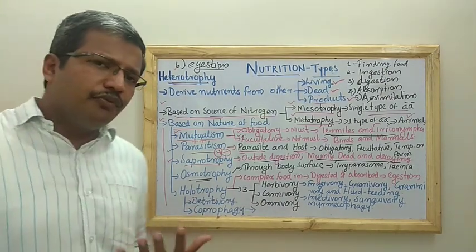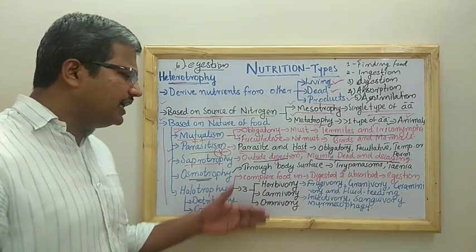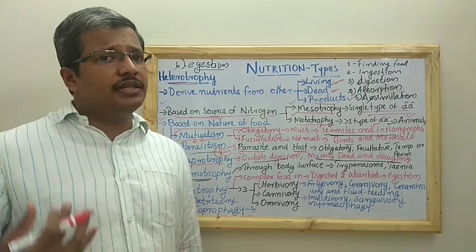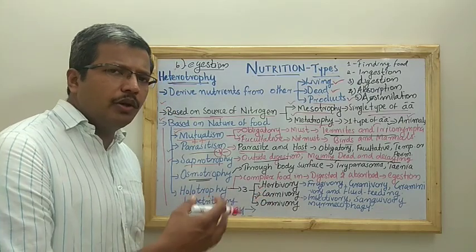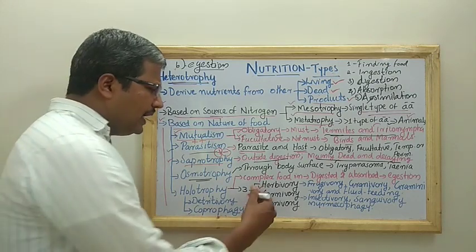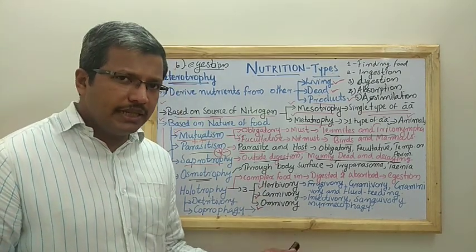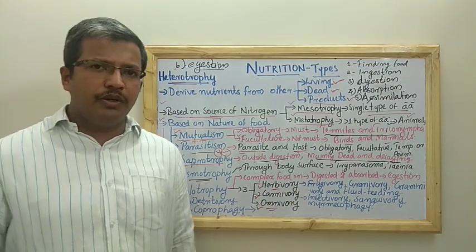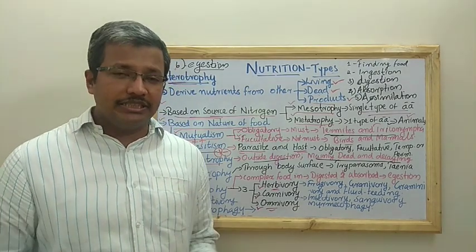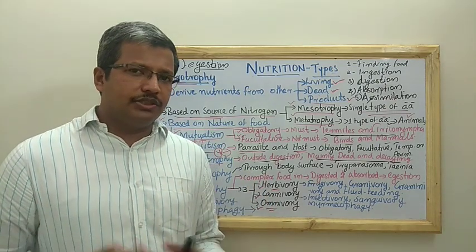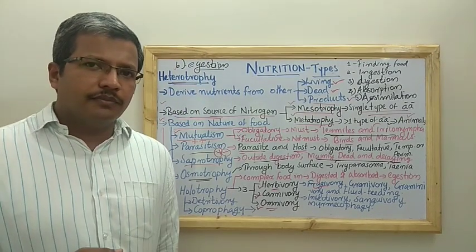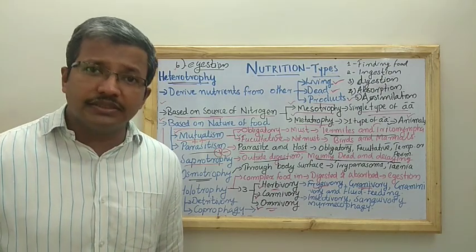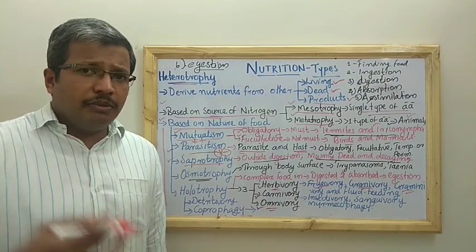Based on the type of food consumed, holotrophy is classified into herbivory (plant material consumed), carnivory (animal matter consumed), and omnivory (both plant and animal consumed). Within herbivory, further classification exists: if the organism eats fruits it is frugivory; if grains are consumed it is granivory; and if grass is consumed that is also a form of herbivory. These sub-types reflect which type of plant material is utilized.